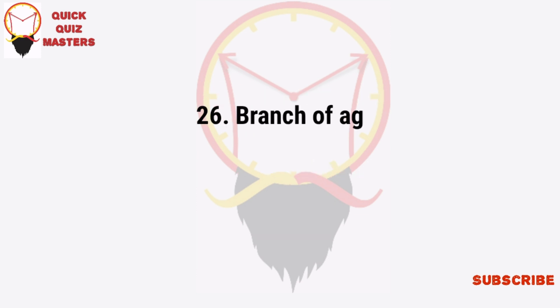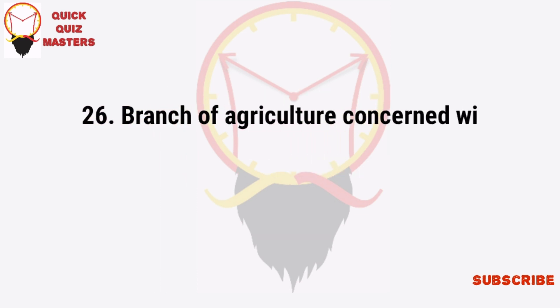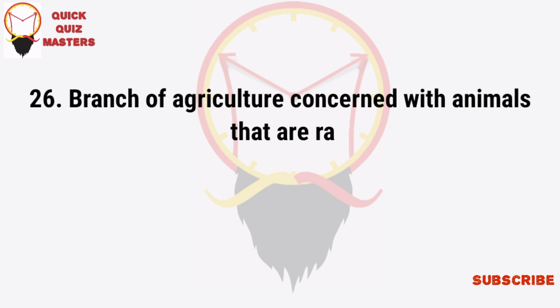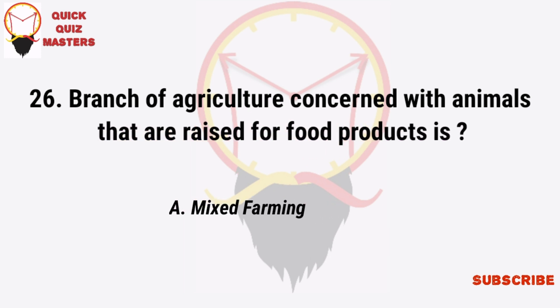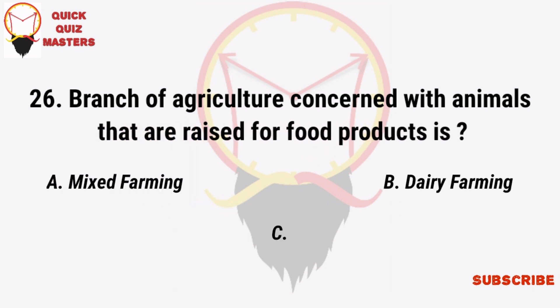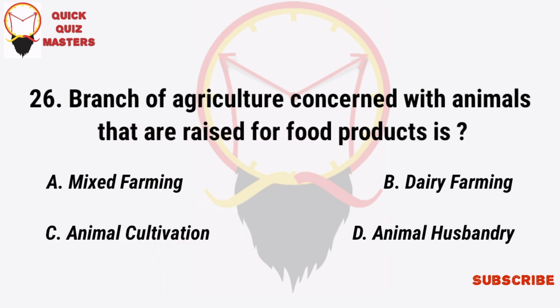The branch of agriculture concerned with animals that are raised for food products is mixed farming, dairy farming, animal cultivation, or animal husbandry.